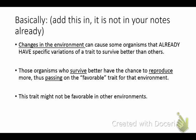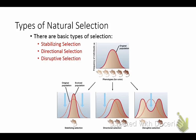Changes in the environment can cause selective pressure, like in the moth example. Organisms who survive better have more chances to reproduce and pass on their traits — though a trait that is favorable in one environment may not be favorable in another. There are three types of natural selection: stabilizing, directional, and disruptive selection.